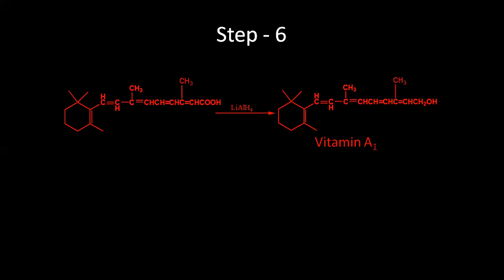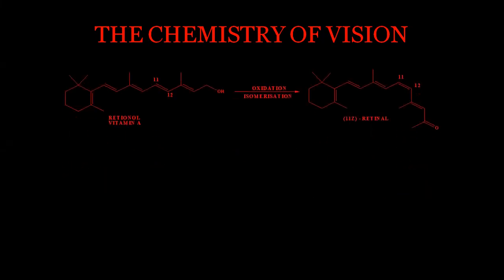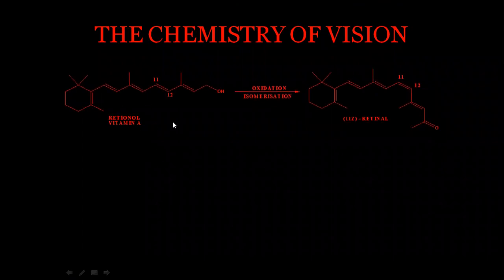Now let us understand how vitamin A1 helps us see — the chemistry of vision. The retina of our eye contains two types of cells: cone cells and rod cells. Cone cells are responsible for color vision and vision in bright light. Rod cells are responsible for vision in dim light. In rod cells, vitamin A1 is oxidized to an aldehyde, and the trans double bond at C11 is isomerized to a cis double bond.